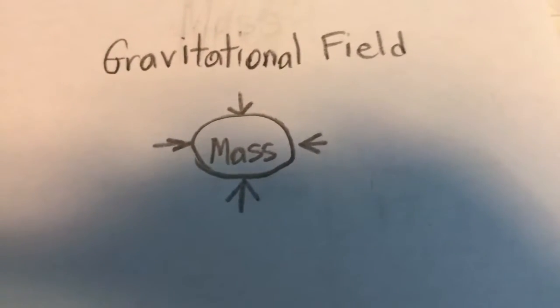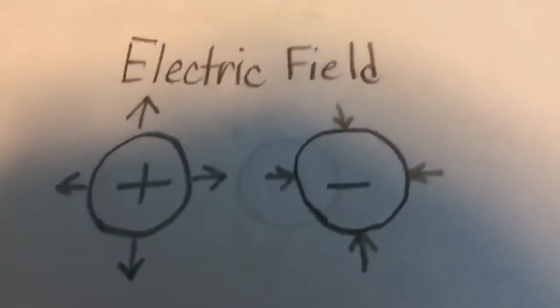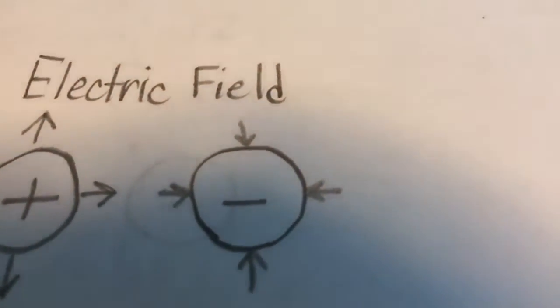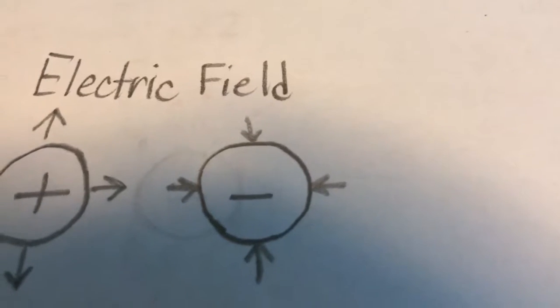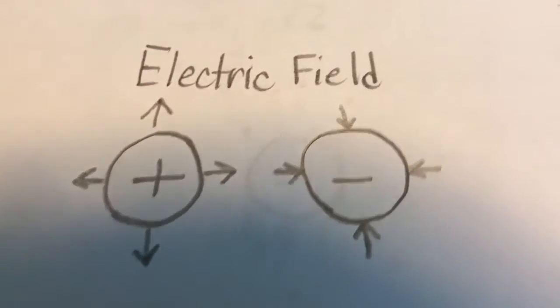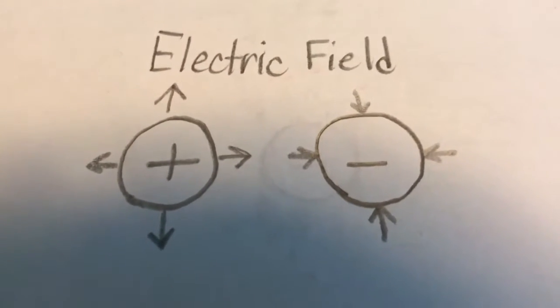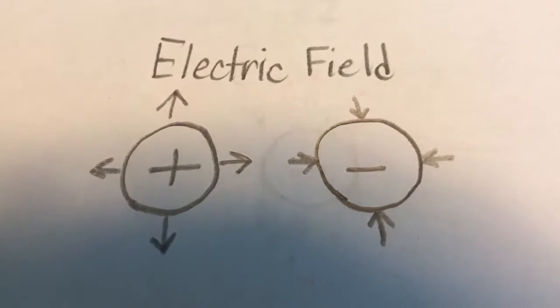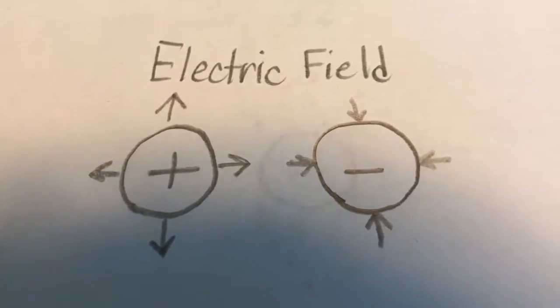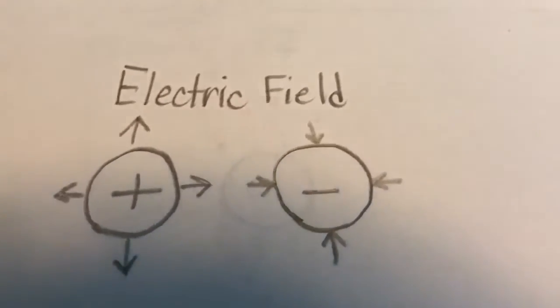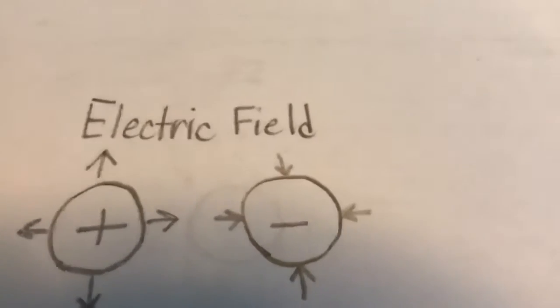However, there is one major difference between charge and mass. There are two different types of electric charge which display opposite properties: positive and negative. Like charges repel, and opposites attract. So electric charge is anything that affects the electric field.